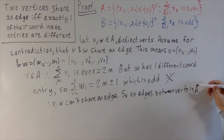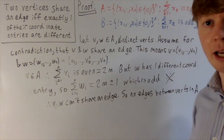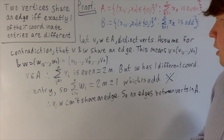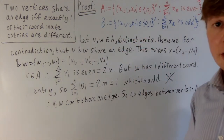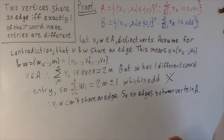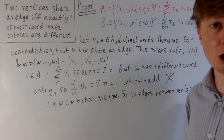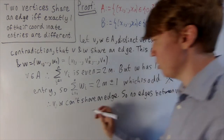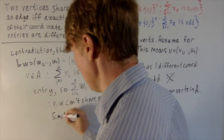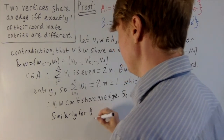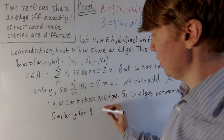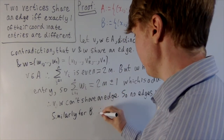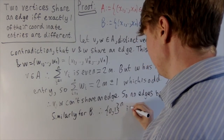We can do the exact same argument for set B. If you take two distinct vertices V and W in B and assume they share an edge, then the sum of coordinate entries for V is odd and for W is also odd, but they differ by exactly one, so you'd get an odd number ± 1, giving an even number — a contradiction. Similarly, there are no edges between vertices in B. Therefore our n-dimensional hypercube graph is bipartite.